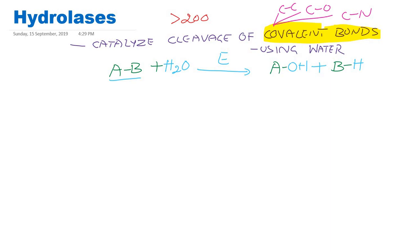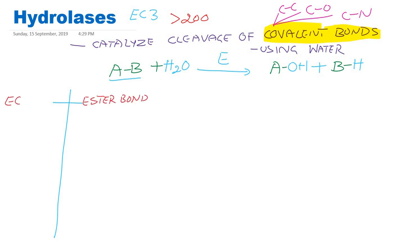As mentioned, they catalyze breakdown of covalent bonds. According to these bonds, they are subclassified into different categories. Hydrolases is EC3, that is enzyme class III. They are subclassified on the basis of their action on functional groups. So they can break ester bond, making them EC3-1, where the subclass will be 1.